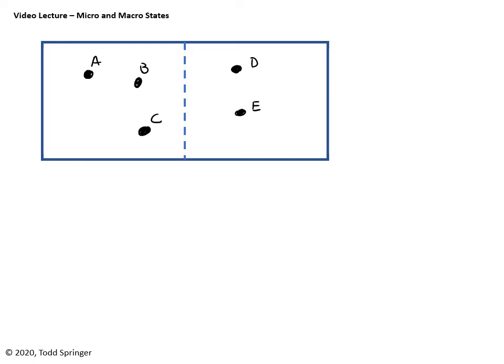So we've done a few examples of how to do the counting. If I had four gas molecules, for example, but what if I have 20? Writing down all those microstates is going to be a pain, so we'd like to learn a faster way of doing this.